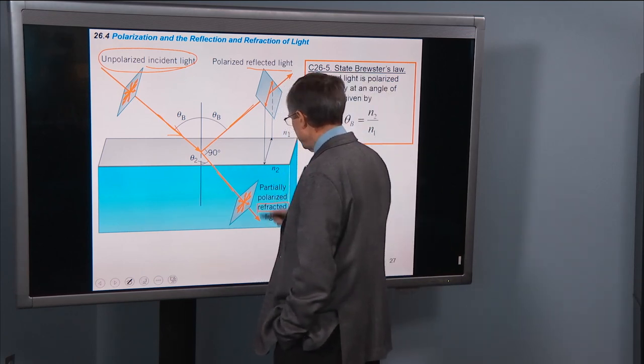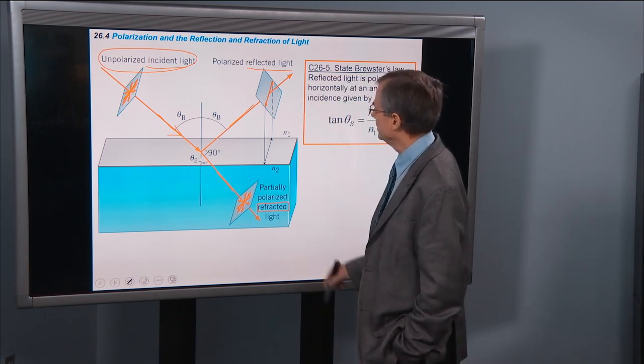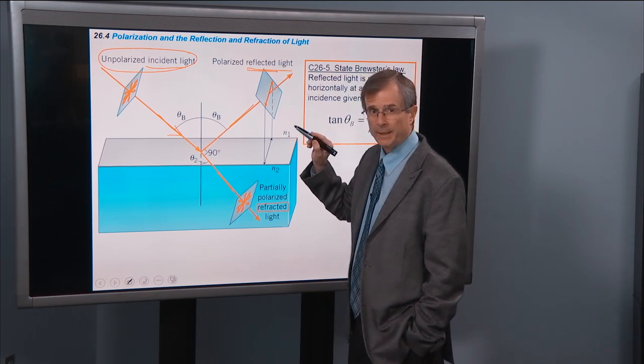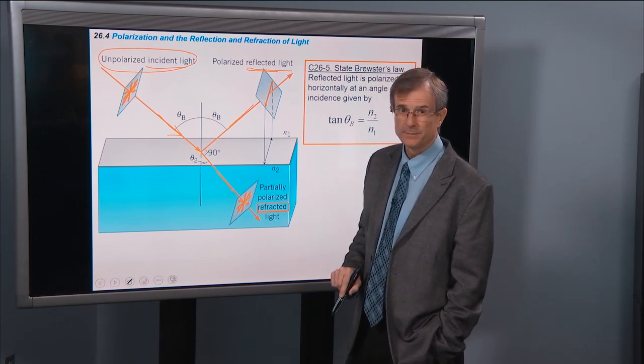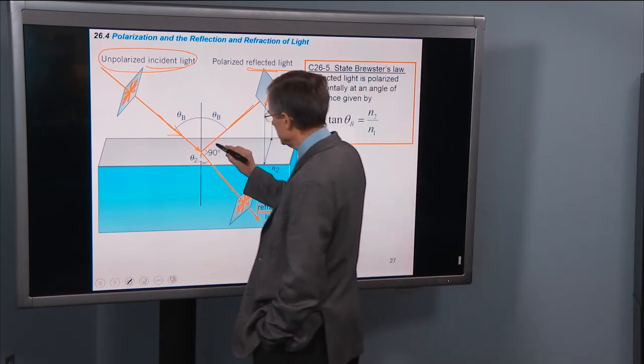So there we go here. If the reflected ray and the refracted ray are 90 degrees apart, 90 degrees from each other, so this angle is 90.